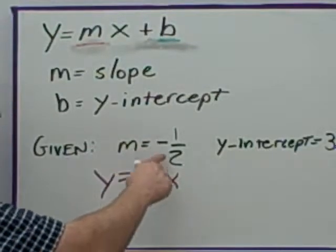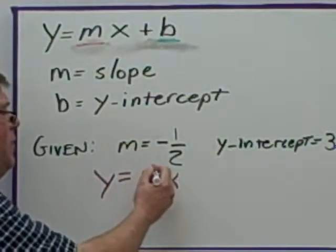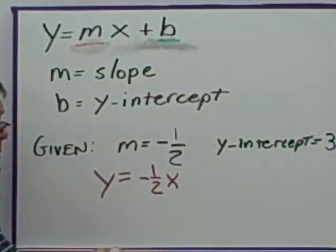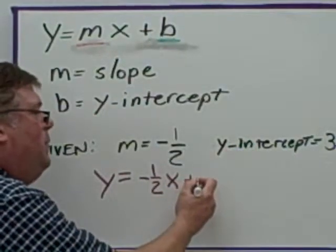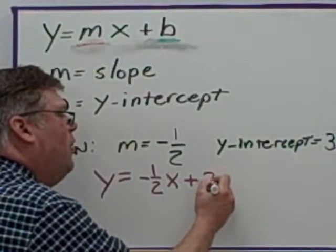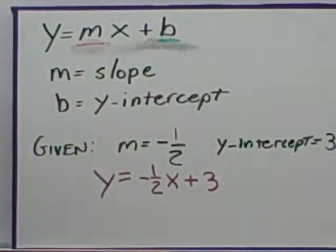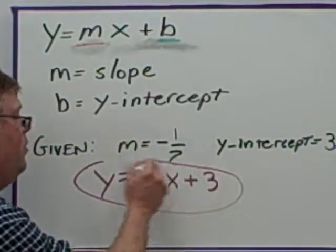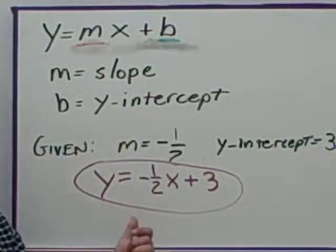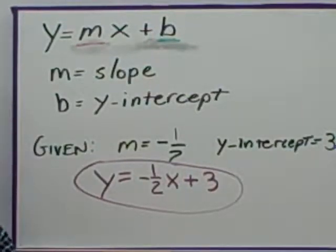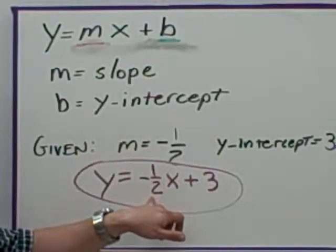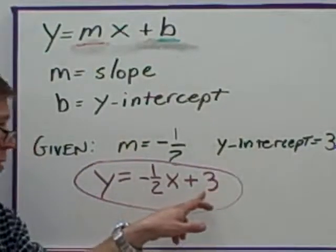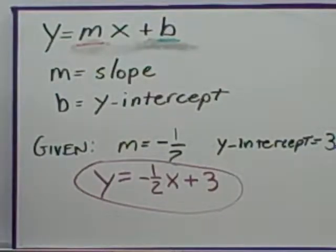We are going to replace the slope with the slope value of one-half, and we replace the plus b with plus three. You now have an equation in slope-intercept form. It really is just as simple as plugging in the slope value in front of the x and the y-intercept replaces the b.